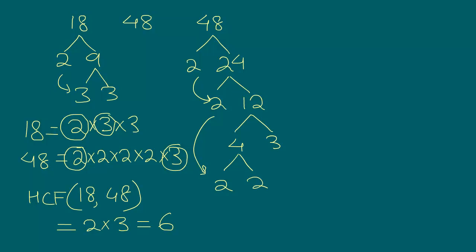Now let's take another example. This time let's take 3-digit numbers — maybe the number 100 and the number 524. I'm randomly picking these numbers. So how do we find out the HCF of these two numbers? We are going to do the exact same thing like we did before.